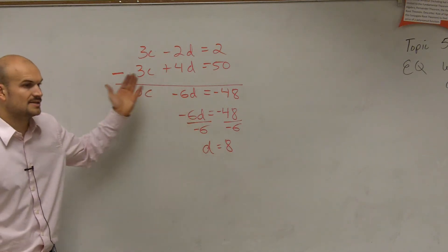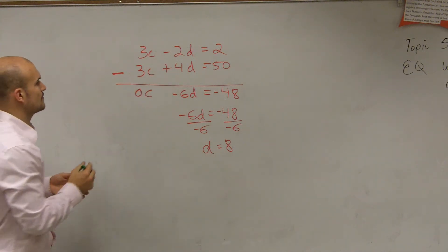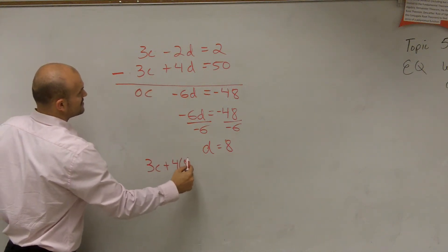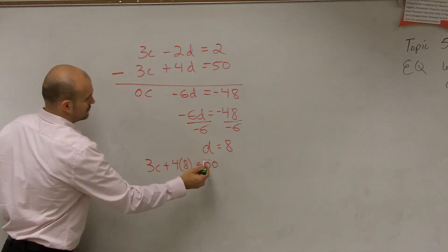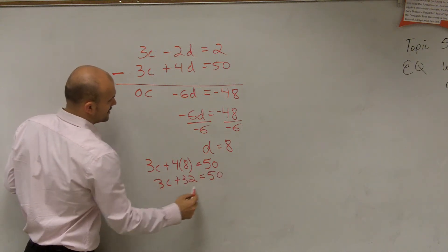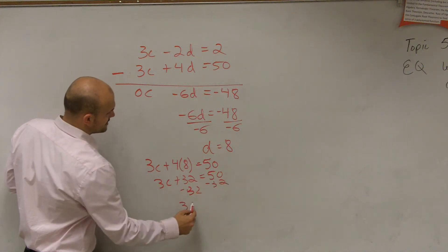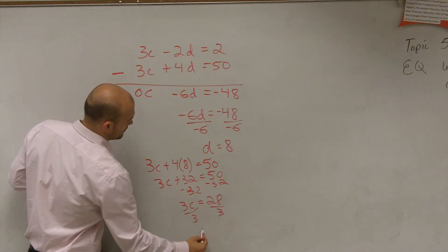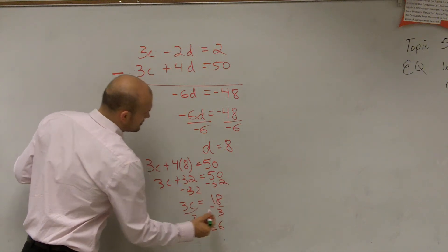Now, I plug that back into the equation. Cody, which one do you want to plug it into, the top or bottom equation? Bottom. So you plug it into the bottom equation. So you do 3C plus 4 times 8 equals 50. So therefore, you get 3C plus 32 equals 50, subtract 32. You get 3C equals 18. Divide by 3. Therefore, C equals 6.